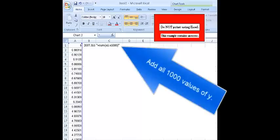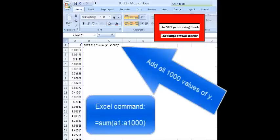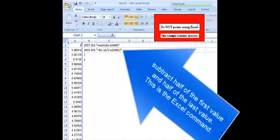Add all 1,000 values of Y. This is the Excel command to do it. Subtract half of the first value and half of the last value. This is the Excel command.